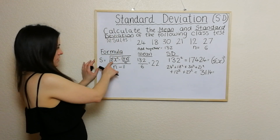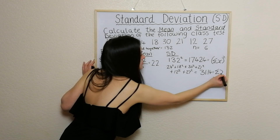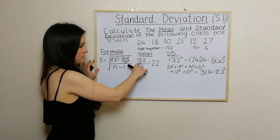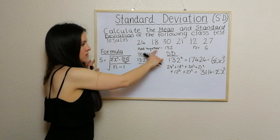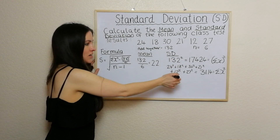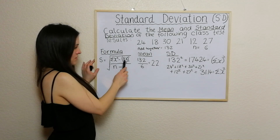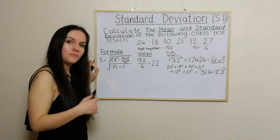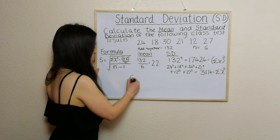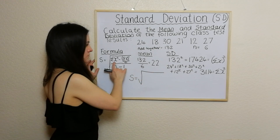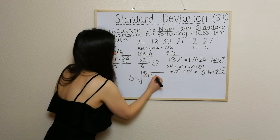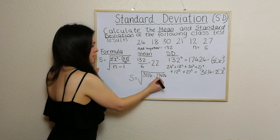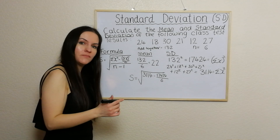So to recap: I added all the numbers together, divided by n to get the mean. I also wrote that sum under the standard deviation column, squared it for the second part of the formula, and separately squared each number and added them together for the first part. Now I'm going to apply these values into the standard deviation formula. This part is 3114, take away 132 squared over n, where n is 6. On the bottom, we have n minus 1, which is 5.